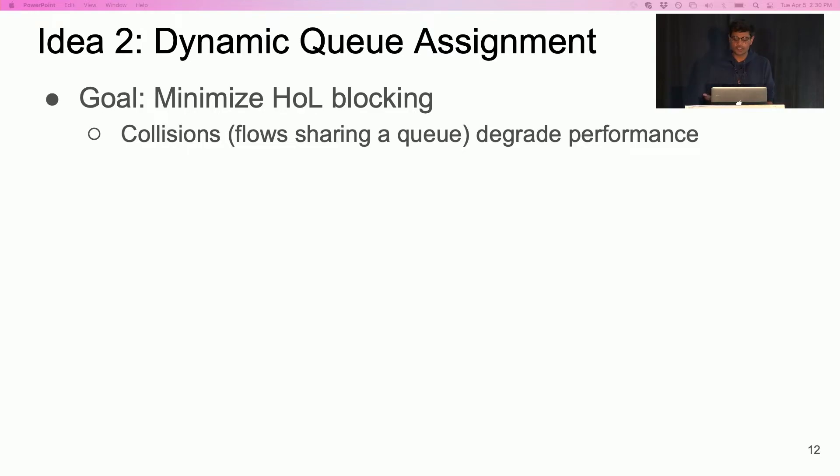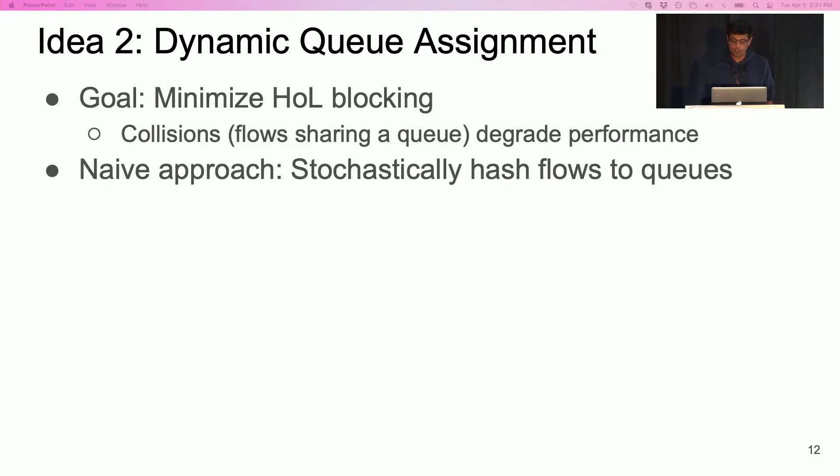Recall that when flows share a queue, they can incur head-of-line blocking. Therefore, the objective for queue assignment is to minimize collisions and the associated head-of-line blocking. One approach is to use stochastic hashing to assign flows to queues similar to stochastic fair queuing. However, this approach is problematic.